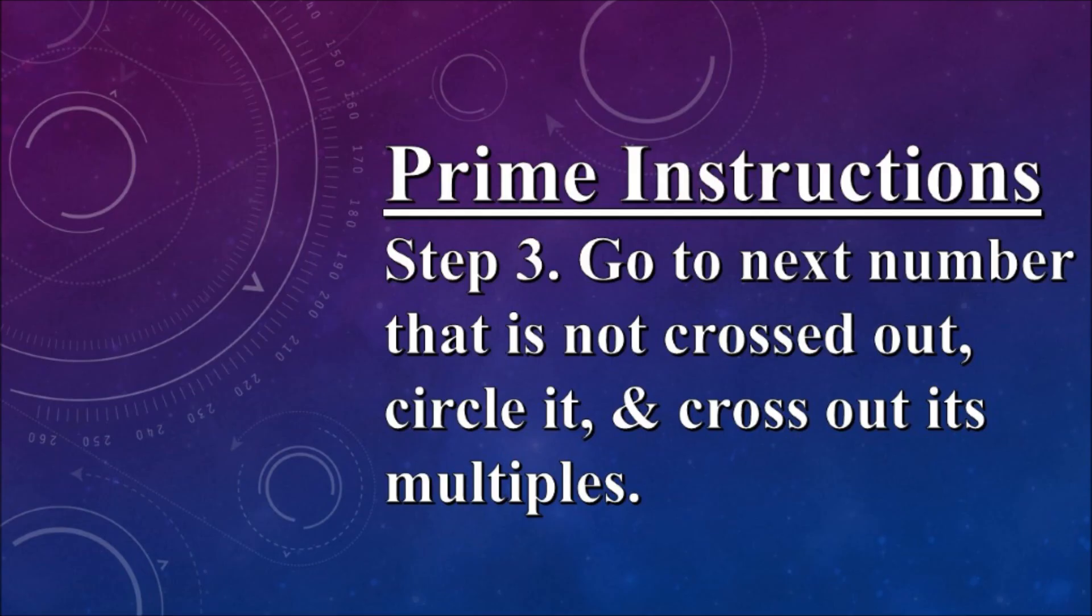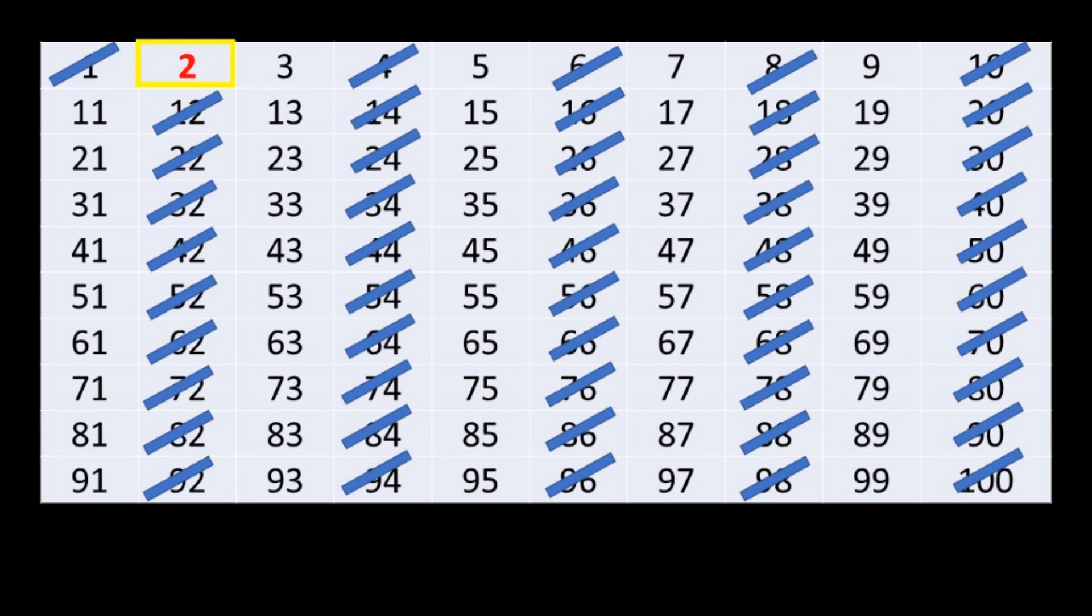Step 3, go to the next number that is not crossed out. Circle it and cross out all of its multiples. Our next number is 3, we circle it and cross out all its multiples.